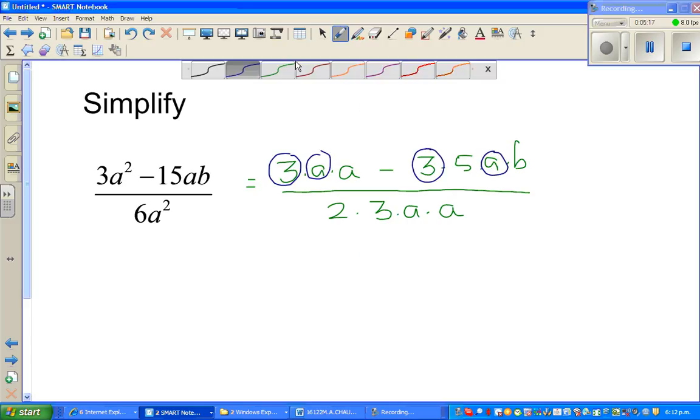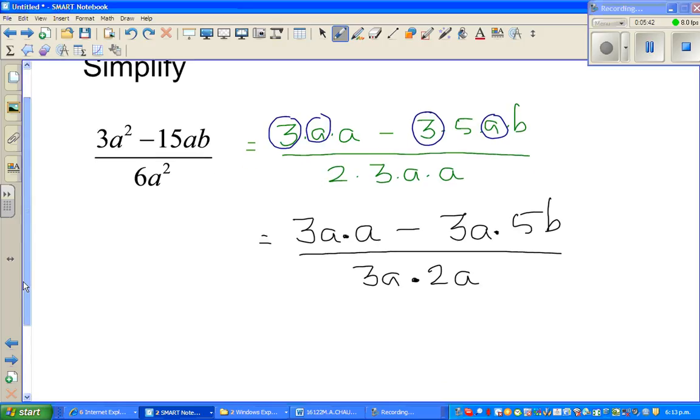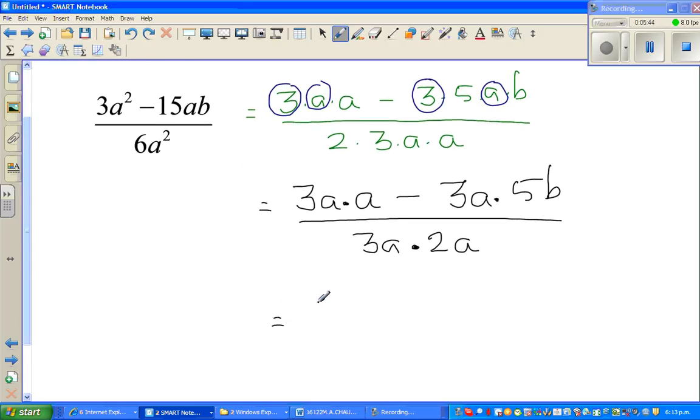Can I write now the numerator like this: 3a times a minus 3a times 5b over 3a times 2a. You can see what I'm doing. I've factored out, I've written everything in terms of 3, which is a common factor. If you factor out a 3a in the numerator, if you take that out, you have a minus 5b over 3a times 2a.